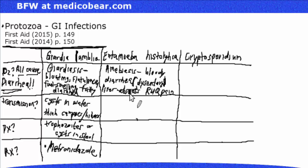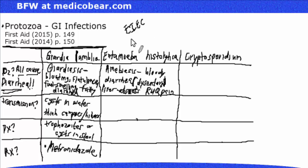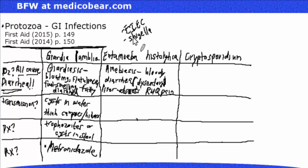Histology of the liver abscess often shows a flask-shaped ulcer. If you see bloody diarrhea in the question stem, don't automatically think Entamoeba histolytica — there are other things in the differential. For example, Enteroinvasive E. coli and also Shigella. Keep your mind open: bloody diarrhea is not just a shoe-in for Entamoeba histolytica; it can be other organisms.